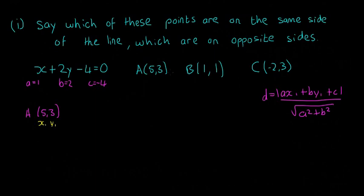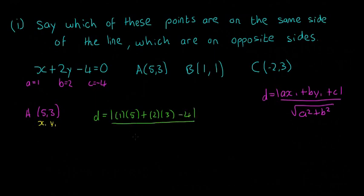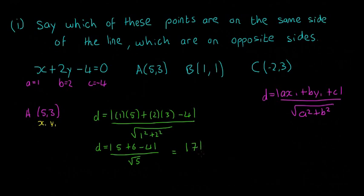For point A, which is (5, 3), x₁ is 5 and y₁ is 3. So D equals 1 times 5, plus 2 times 3, plus minus 4, all divided by the square root of 1 squared plus 2 squared. That gives us 5 plus 6 minus 4, divided by root 5, which equals 7 divided by root 5. Notice that this is a positive result — so I'll mark A as plus.